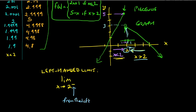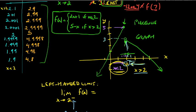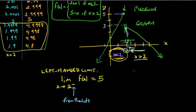So the left-handed limit of f(x): if we only care about what happens when x is less than 2, then looking at those entries in the table, the y-values seem to be getting close to 5. So this function does have a left-handed limit of 5.